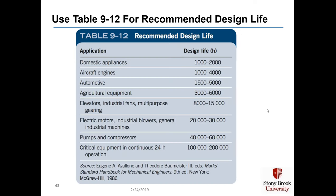Table 9-12 gives recommended design life for different machine types. Critical equipment in 24-hour operation may require 100,000 to 200,000 hours, while a cheap domestic appliance like a blender may only need 1,000 to 2,000 hours. Use these numbers as guidelines, or use a specific hour requirement from the machine's design specification.